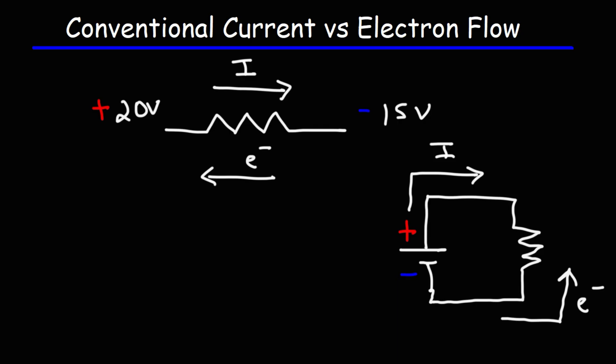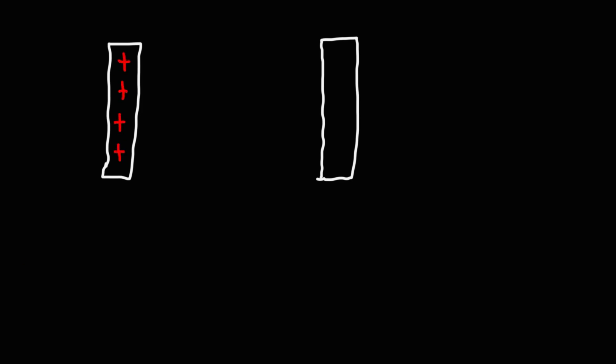Another way to see this is to imagine we have two parallel plates. The plate on the left is going to be a positively charged plate, and the one on the right will be a negatively charged plate. Let's say this one is at a potential of 100 volts, and the other one has an electric potential of negative 100 volts. There's going to be an electric field that goes from the positive plate and points towards the negative plate.